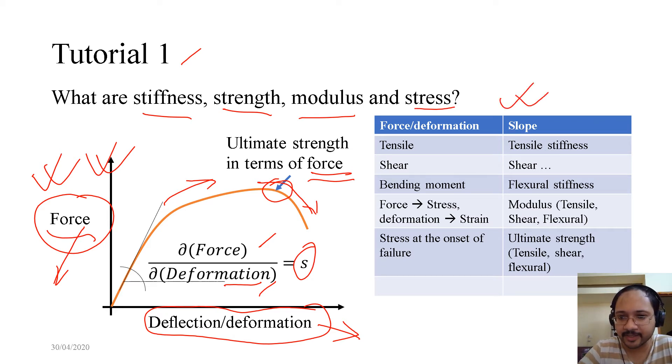Now coming to some basic relations of force deformation and slope. If it's a tensile force against tensile deformation, you get tensile stiffness, which is the slope. For shear, you get shear stiffness. For bending moment, you get flexural stiffness. It can be a plot between moment and curvature. It can be a plot between the load due to the bending against the deflection due to the bending.